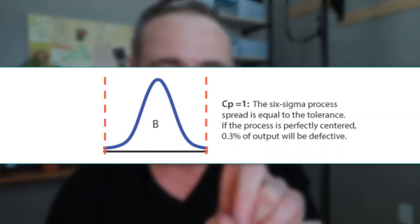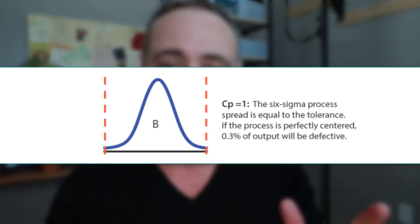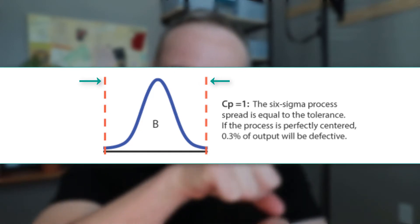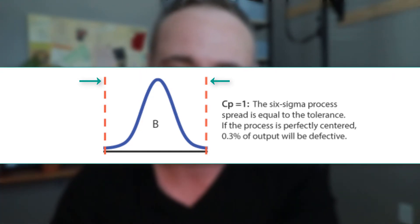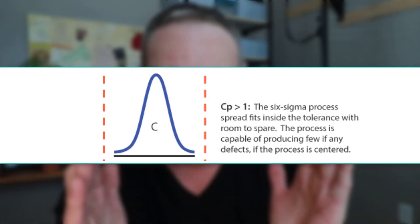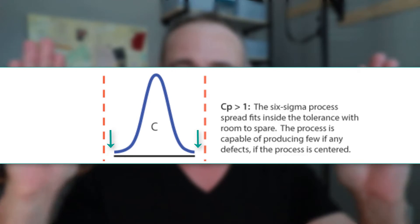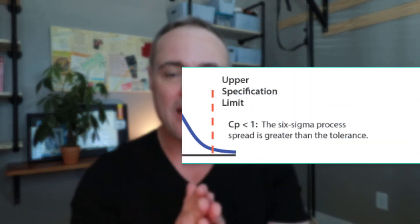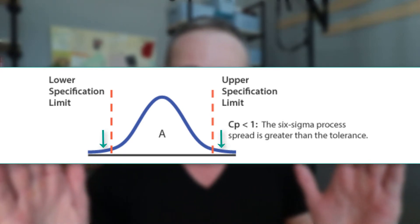Let's stick with CP for now. If we have a CP value of 1, that means the output of our process is right on the edges of — or just meets — the customer specification limits. The histogram rides right on those lower and upper specification limits, meaning the voice of the process is meeting the voice of the customer. If we have a CP greater than 1, like 1.33, the voice of the process is inside the customer specification limits and we'll see some gap between the spec limits and the edges of our bell curve — that's a good thing. Conversely, if CP is less than 1, the process dispersion is outside the customer specification limits — that's bad.